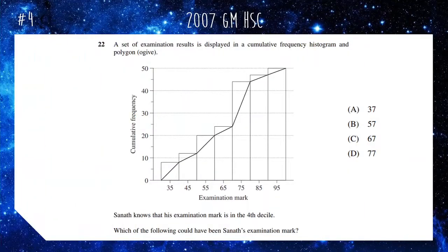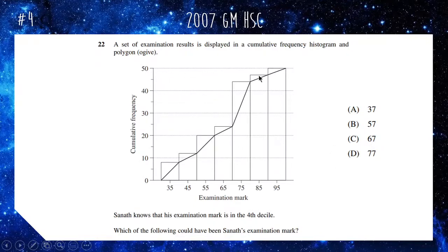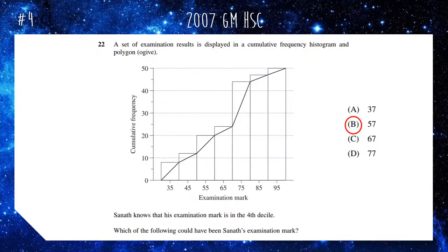Next one from the 2007 HSC paper: we have a cumulative frequency histogram with an ogive. Sanath knows his examination mark is in the fourth decile — which of the following could have been his mark? We have a set of 50 scores, so a tenth of 50 is 5. The fourth decile runs from the 15th to 20th score. Reading off the graph, Sanath's mark is in the range of around 55, so the only answer that makes sense is option B, which is 57.